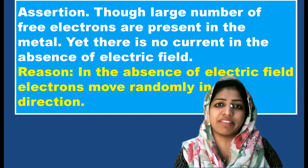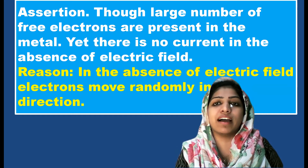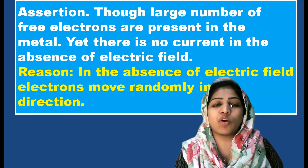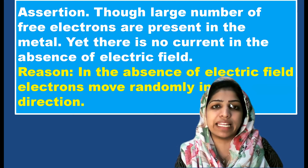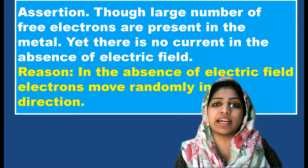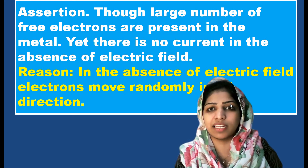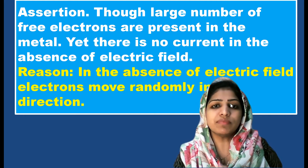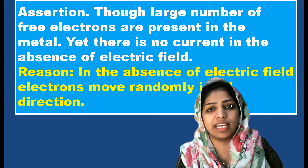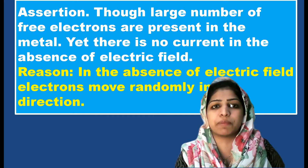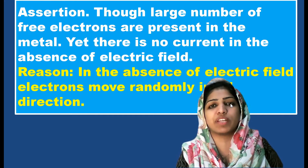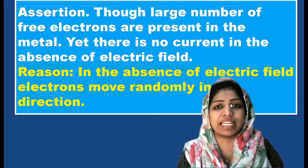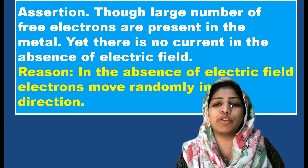Copper is a good conductor of electricity because it has a large number of free electrons. However, when we use a copper wire, we use a battery — an external electric field. Electrons are in constant random motion, but in a different direction each time. When we apply an electric field, we get a current.